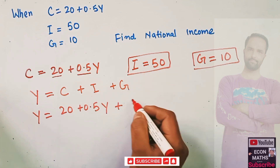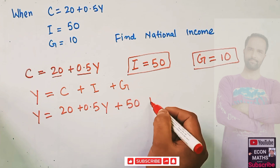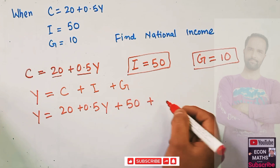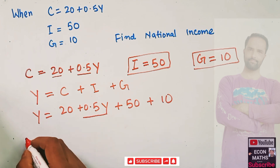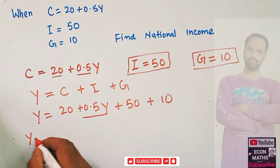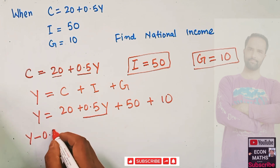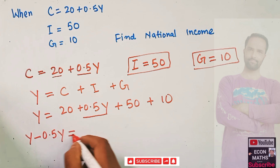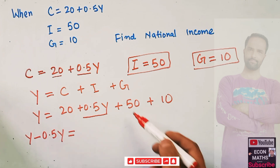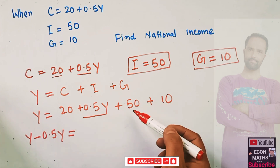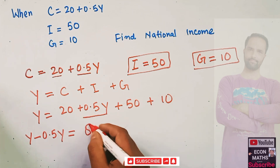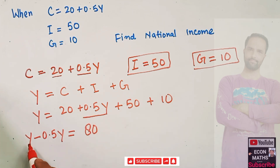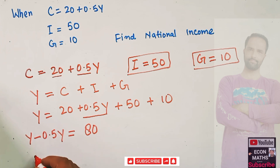So Y equals our consumption function, which is 20 plus 0.5Y, plus our autonomous investment of 50, plus government expenditure of 10. Transposing the 0.5Y term to the left-hand side, it gets subtracted, giving us 0.5Y equal to 50 plus 10 plus 20, which is 80.